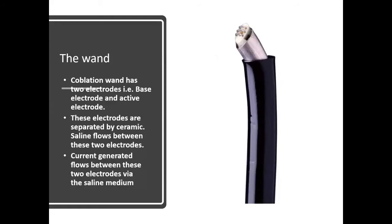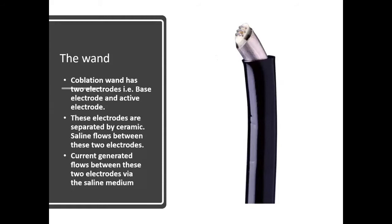If the console is the heart, the wand is the soul — this is through which the plasma is produced. The wand is made of ceramic, and the electrodes are made of tungsten. Many companies have come up with multiple devices, but none have been able to achieve the finesse and electrode thickness that Smith & Nephew has achieved.